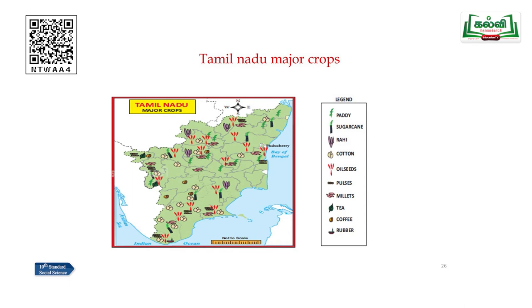There is a map of Tamil Nadu showing the distribution of major crops, with symbols indicating paddy, sugarcane, ragi, cotton, oil seeds, pulses, millets, tea, coffee and rubber. Till now we have discussed the determinant factors of agriculture — land, climate, soil and irrigation — and the major crops: paddy, millets, sugarcane, cotton and oil seeds.